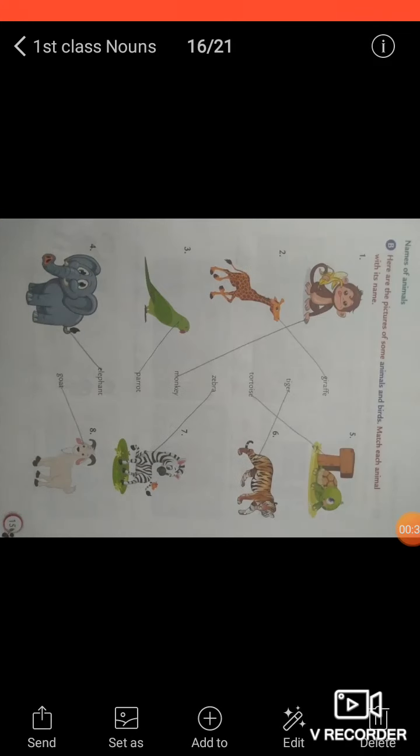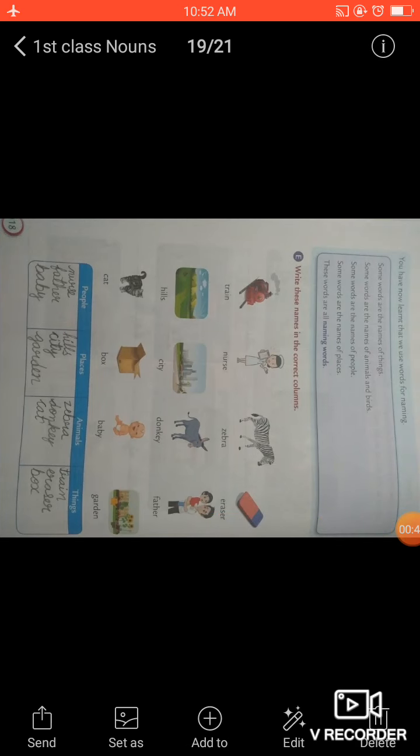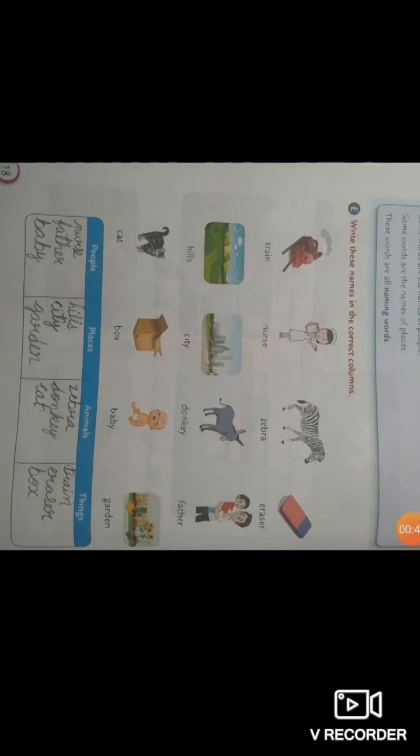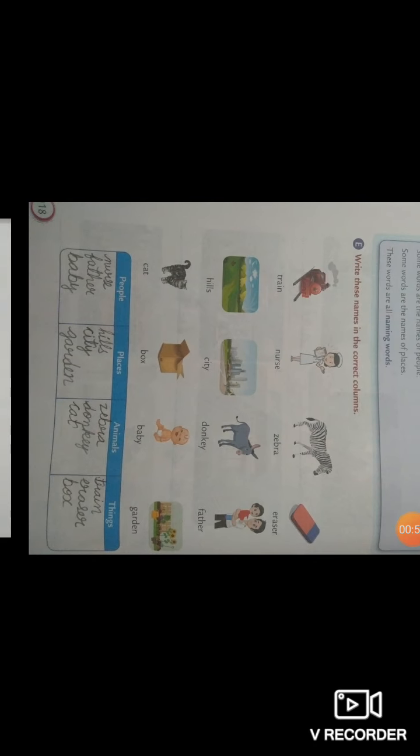These pages were 14, 15, 16, 17. So today we are going to start with page 18 of English grammar. Here we have part E. Write these names in the correct column. Here a few of the pictures are given.